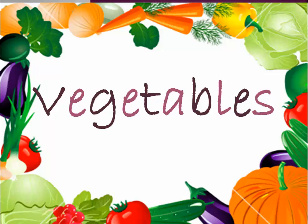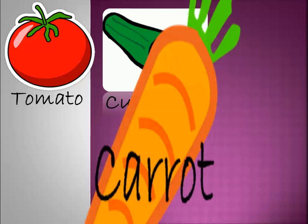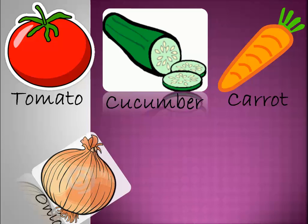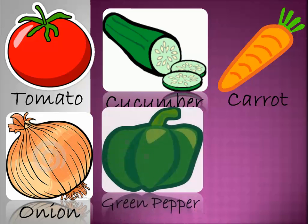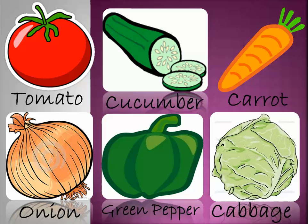Let's move to the vegetables. Vegetables are like tomato, cucumber, carrot, onion, green pepper, and cabbage.